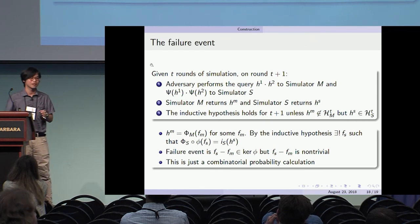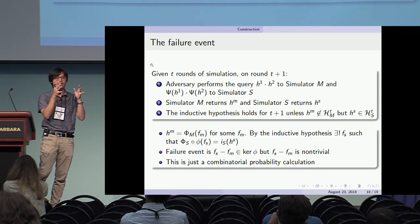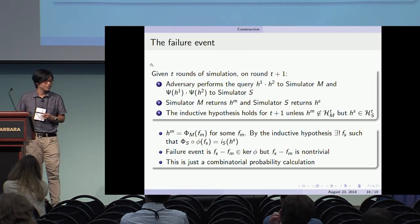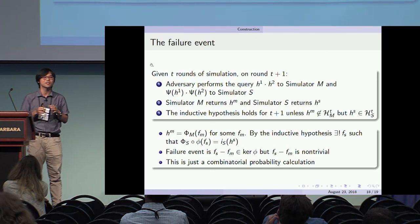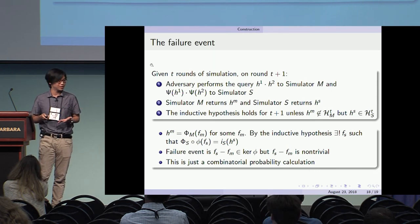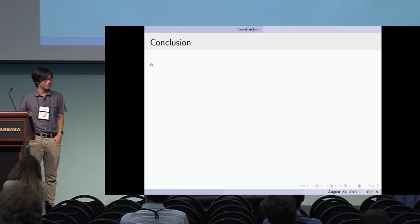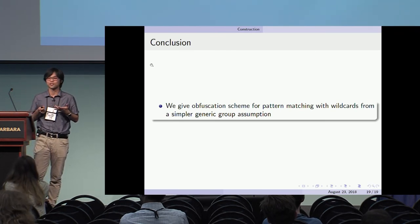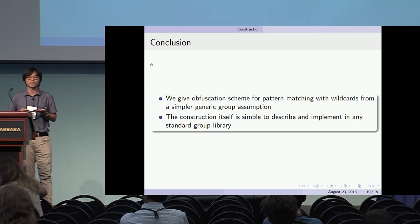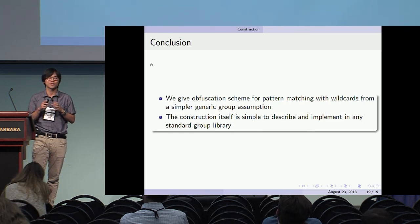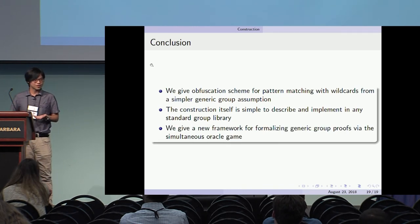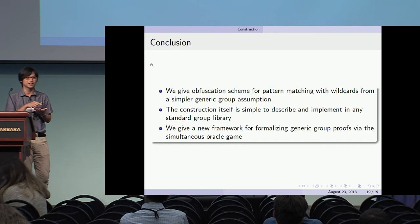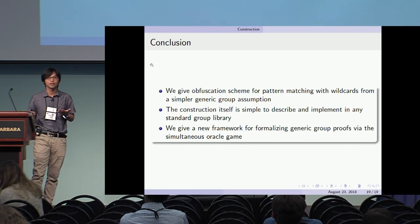The same argument applies to both games — defining an evaluation map from M to E evaluating on different random entries. To conclude: we give an obfuscation scheme for pattern matching with wildcards, proven secure from the standard generic group model assumption. The assumption is easy to describe — computing a rational number outside the group and then exponentiating with the group oracle. We also provide a new framework for formally reasoning about generic group arguments using a simultaneous oracle game, which more explicitly identifies when a simulation fails.